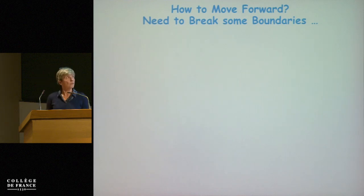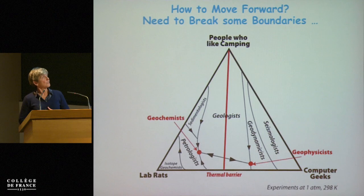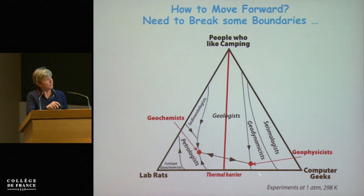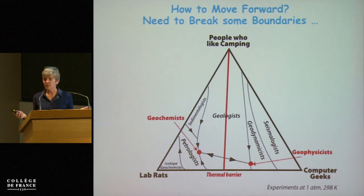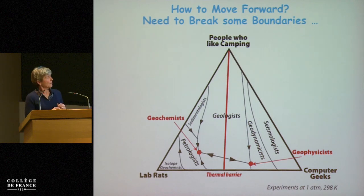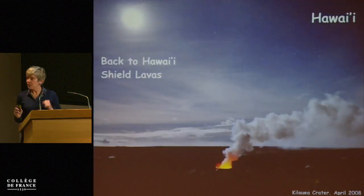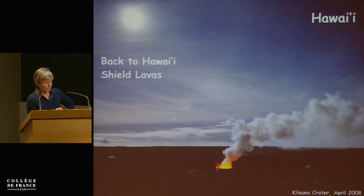So how can we move forward? We need to break some boundaries. There is a thermal barrier, but I find that all these boundaries are actually more difficult to cross today than they were 10 years ago. I can't be put in the lab — I like the outdoors. Let's go back to Hawaii, because there are still many questions. We're still focusing only on the shield lavas.